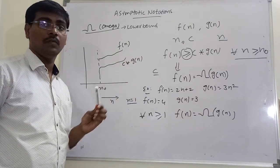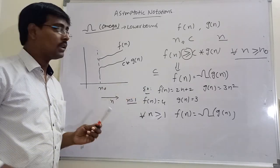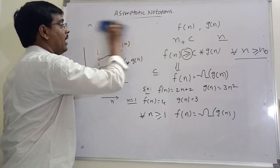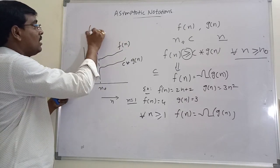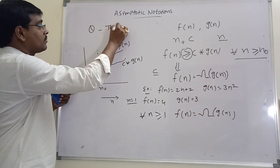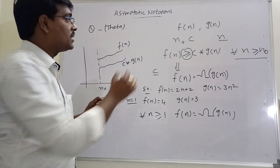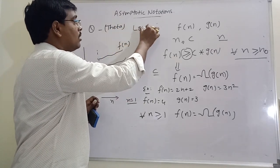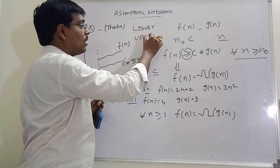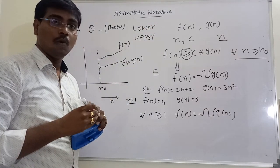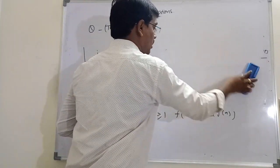Omega notation specifies the lower bound, that is the minimum amount of time. Next one is Theta notation. Theta notation specifies both lower bound and upper bound of the algorithm.